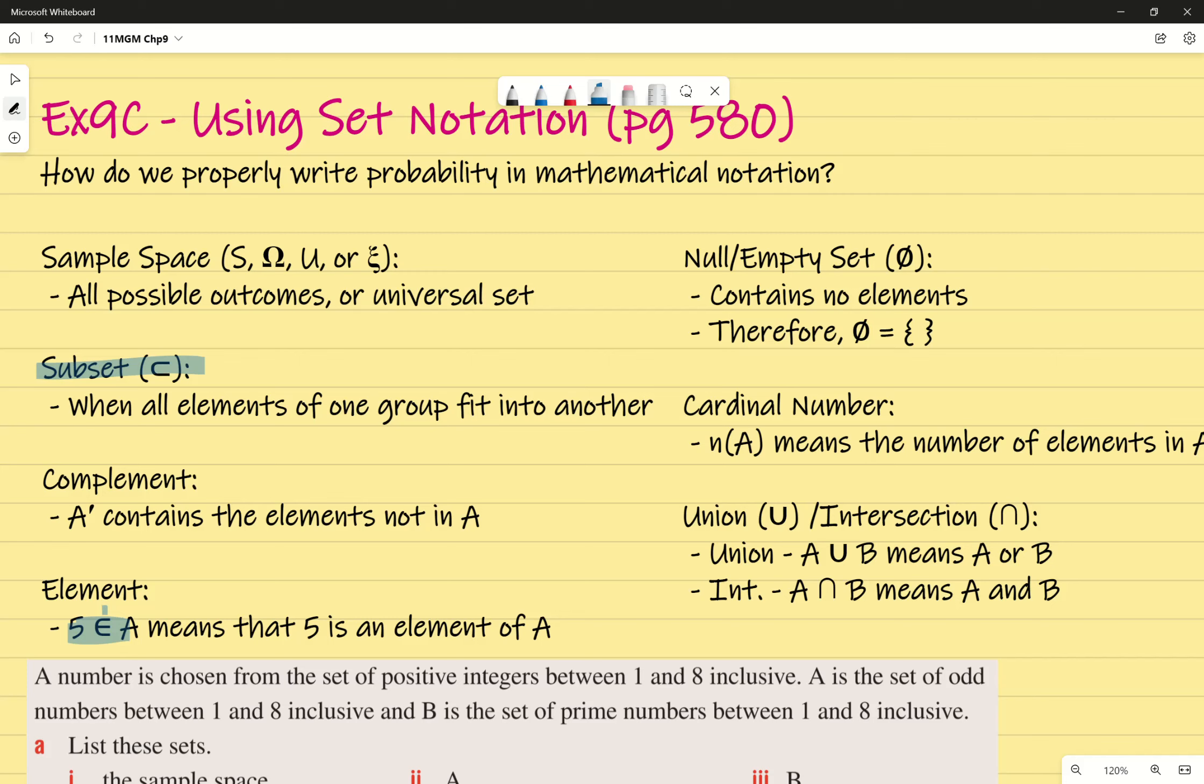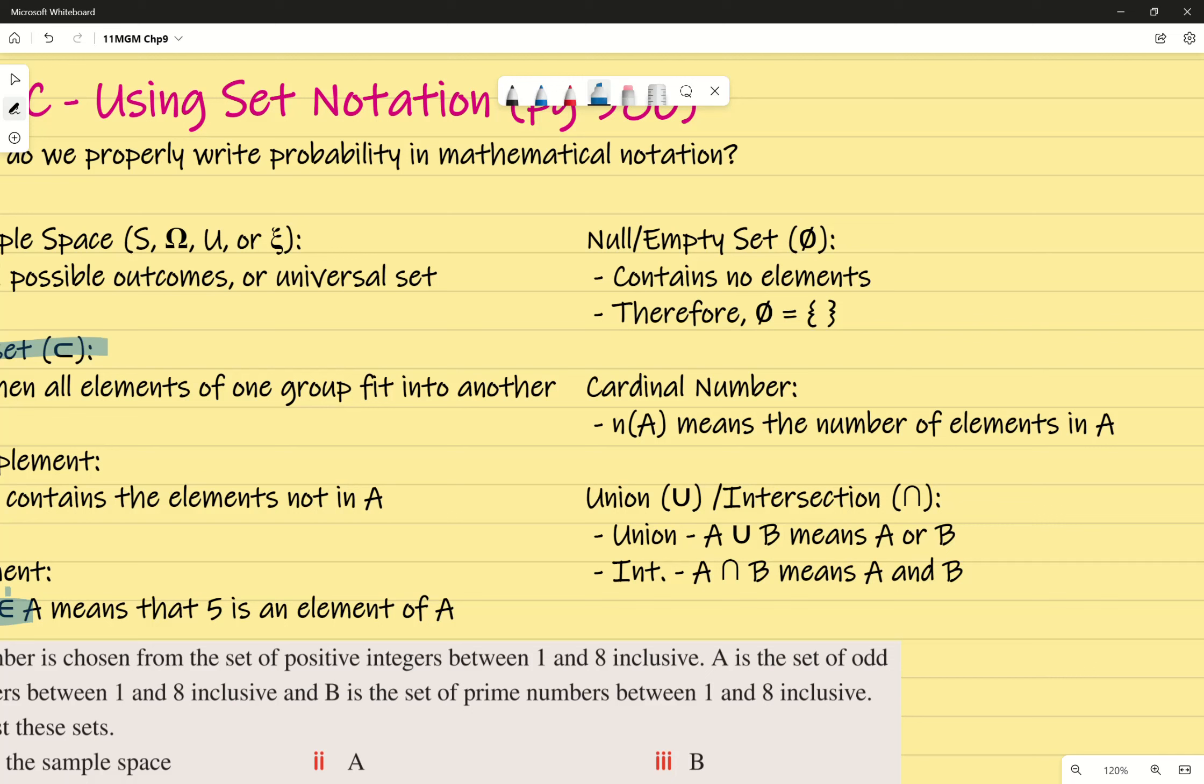For the second section over there, you can see null or empty set. That symbol there with the zero crossed out means that's an empty set. In terms of, for example, there's nothing in it. There's no numbers in it. There's no colors or no whatever it is. You just write that symbol there. Basically meaning if your sample space is written, there's nothing in it. Your cardinal number is just the number of elements in it, not to be mistaken with what the sample space is. It'd be how many things are in the sample space. And we'll go through an example in a moment.